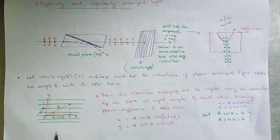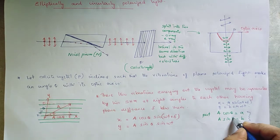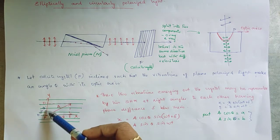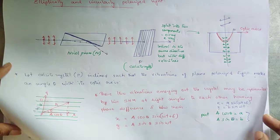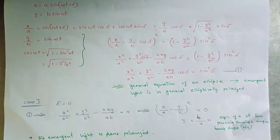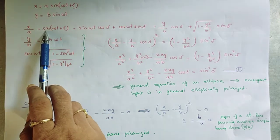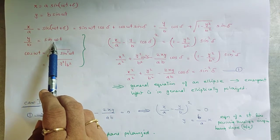Here A can be replaced by the component A cos theta, which is the component parallel to the optic axis, and B can be replaced by A sin theta, the component perpendicular to the optic axis. Now solving these two equations using simple mathematical steps: x/A = sin(ωt + δ) and y/B = sin(ωt).